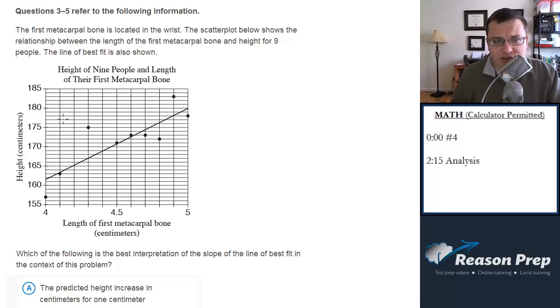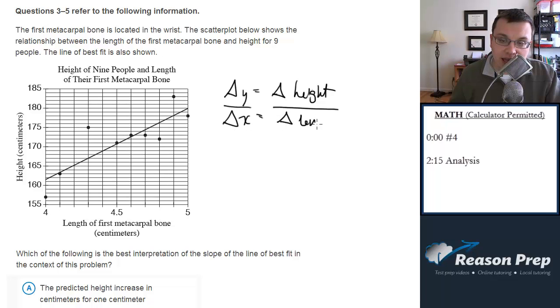So let's first figure out what the slope would be for this. It's going to be the change in y over the change in x, the rise over the run, but what do those quantities represent? The change in y is the change in the height and the change in x is the change in the length of the metacarpal bone.